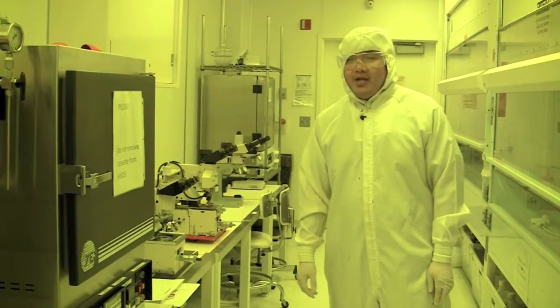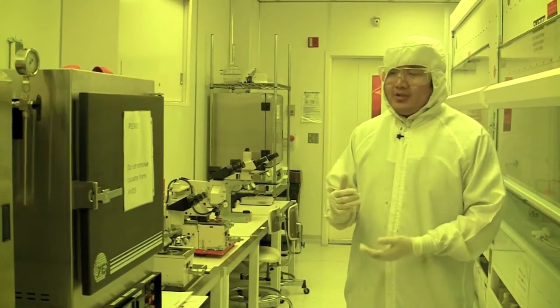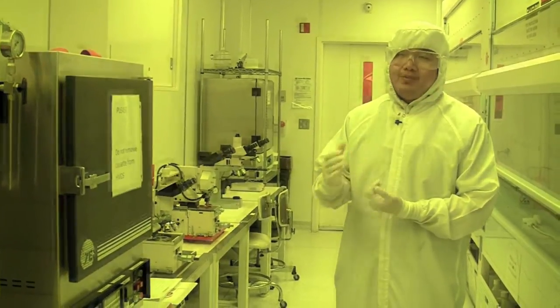This is the HMDS oven. It is used to deposit HMDS on your wafer. What it can do is improve the adhesion of the wafer to the photoresist.